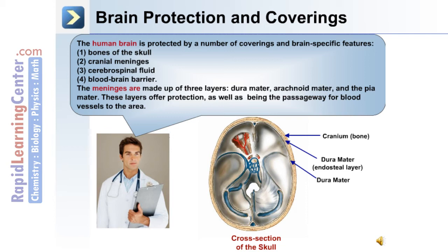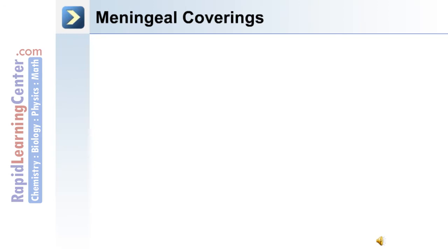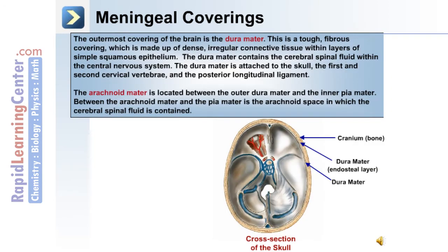These meningeal layers offer protection and serve as the passageway for blood vessels. The outermost covering is the dura mater, a tough fibrous covering made up of dense irregular connective tissue. The dura mater is attached to the skull and the first and second cervical vertebrae, as well as the posterior longitudinal ligament. The arachnoid mater is located between the outer dura mater and the inner pia mater.